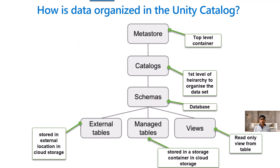So let's understand how data is organized in the Unity Catalog. Unity Catalog uses a hierarchical structure. On the top level, the first container is called the Metastore. If you have a particular Metastore, all the child items beneath it will be accessible. Then the next level is the first level of hierarchy helpful for organizing your datasets — this is the first level after Metastore, which is the Catalog.